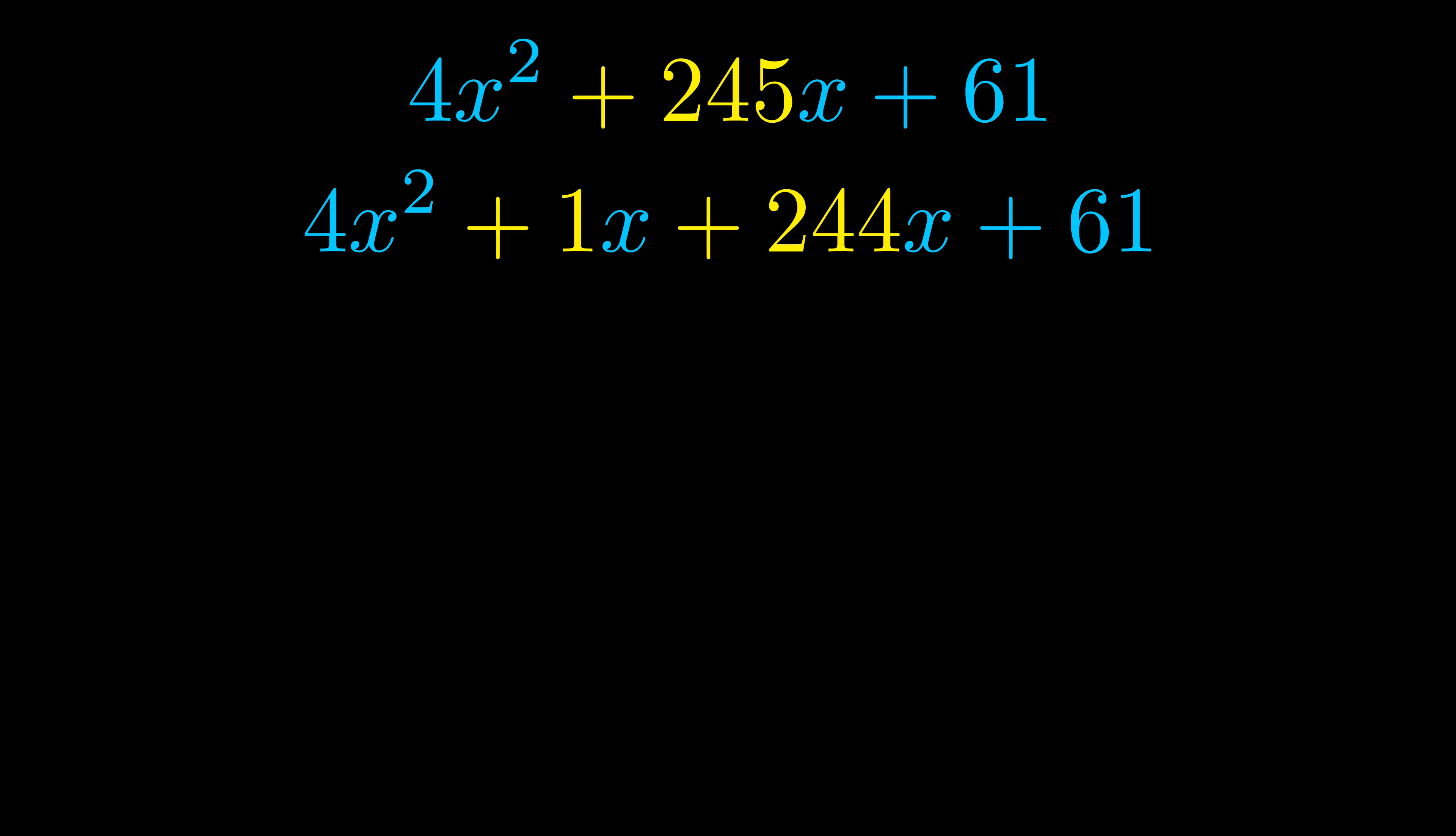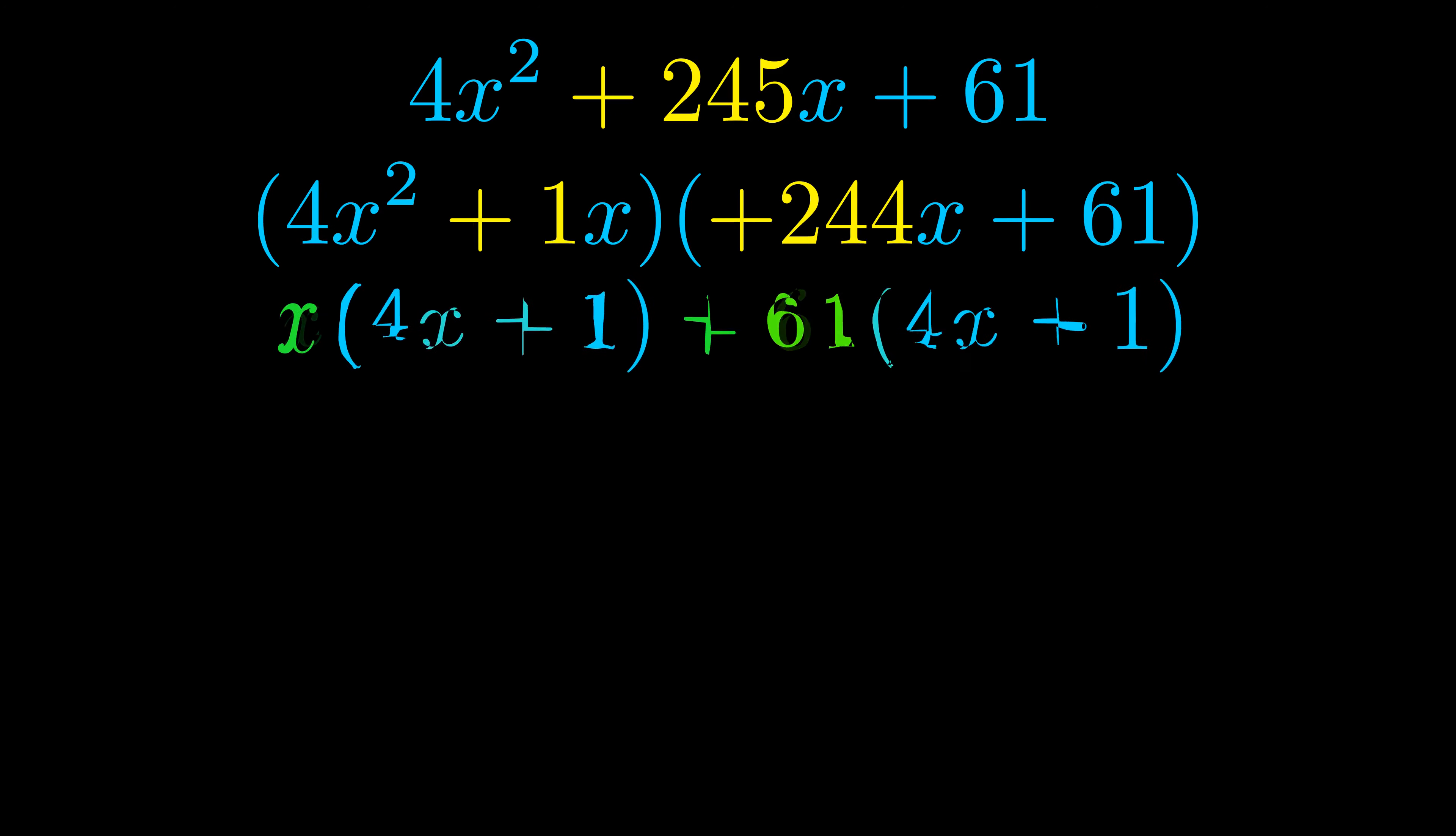Once we've done this we go ahead and we put parentheses around the first term and the last term and we do that so that we can take the greatest common factor out of both terms. We can see the greatest common factor is now outside in green.